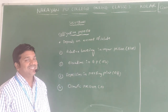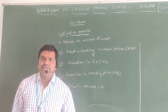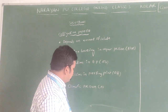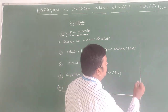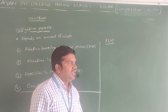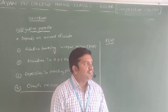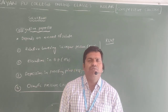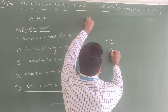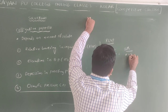The first one we have is Relative Lowering in Vapor Pressure. What is Relative Lowering in Vapor Pressure? The formula is: P0 minus P divided by P0 is equal to N1 by N1 plus N2.